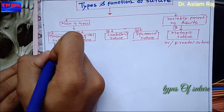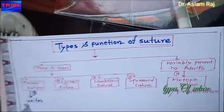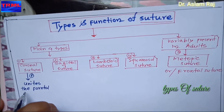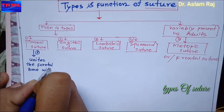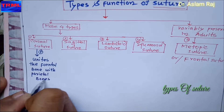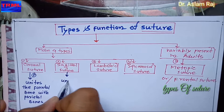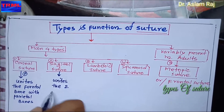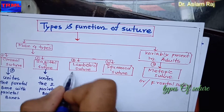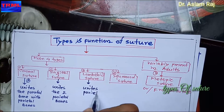The coronal suture unites the frontal bone with the parietal bones. The sagittal suture unites the two parietal bones — it is present between the two parietal bones. The lambdoidal suture unites the parietal bones with the occipital bones.